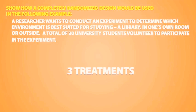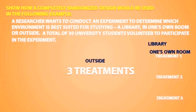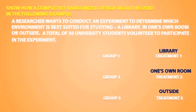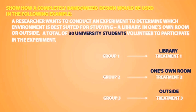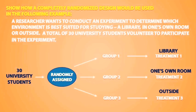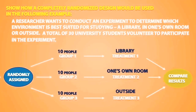We have three treatments: the library, in one's own room, and outside. Since we have three treatments, we will have three groups receiving the treatments. The 30 subjects will be randomly assigned into three groups, so each group will have 10 people. At the end of the experiment, we would compare the results from each treatment.